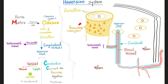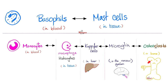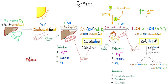Osteoclasts in your bone are the equivalent of monocytes in the blood, which are equivalent to macrophages in the tissue, Kupffer cells in the liver, microglia in the brain, etc. You need calcium to have healthy bone, but you also need vitamin D, which boosts calcium in the blood and can also boost calcium in the bone depending on the circumstances.